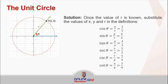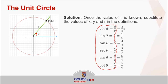Once the value of r is known, we can now substitute the values of x, y, and r in the definitions. These are the definitions we gave earlier, and since we already know the values of x, y, and r, we just substitute them in. So we got these numbers — these are the trigonometric values of that particular point.